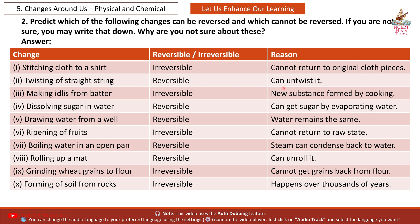2nd: twisting of straight string — REVERSIBLE. Reason: can untwist it. 3rd: making idlis from batter — IRREVERSIBLE. Reason: new substance formed by cooking. 4th: dissolving sugar in water — REVERSIBLE. Reason: can get sugar back by evaporating water. 5th: drawing water from a well — REVERSIBLE. Water remains the same. 6th: ripening of fruits — IRREVERSIBLE. Reason: cannot return to raw state. 7th: boiling water in an open pan — REVERSIBLE. Reason: steam can condense back to water.